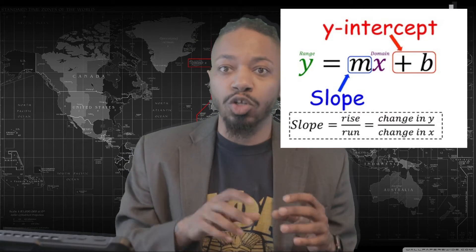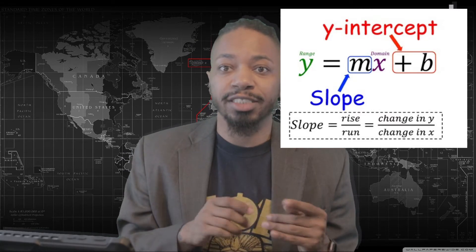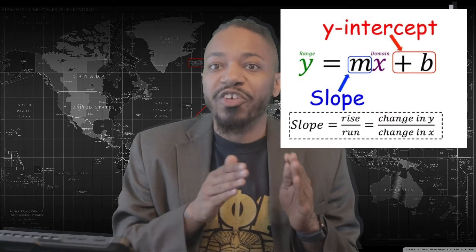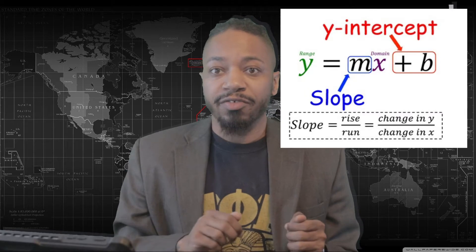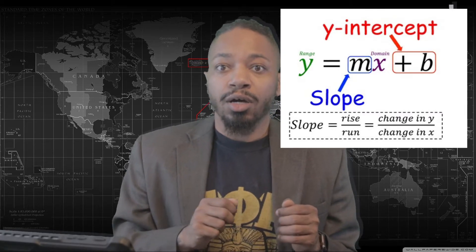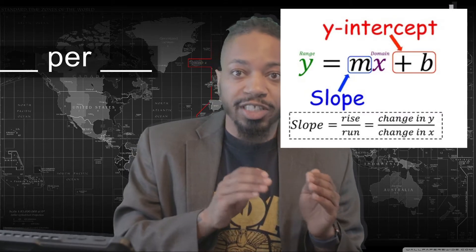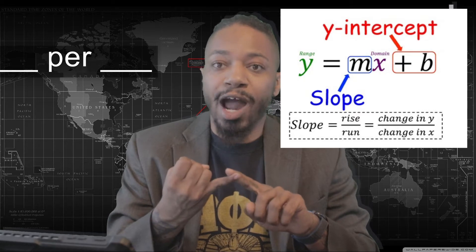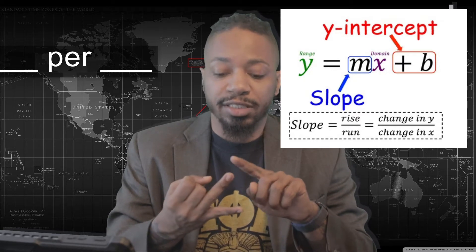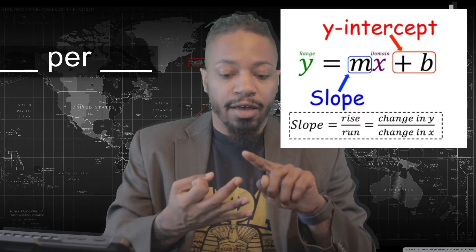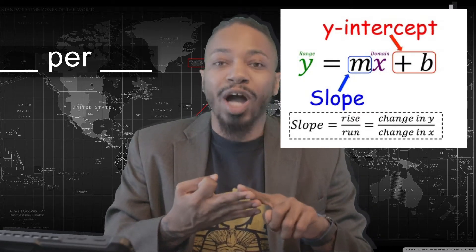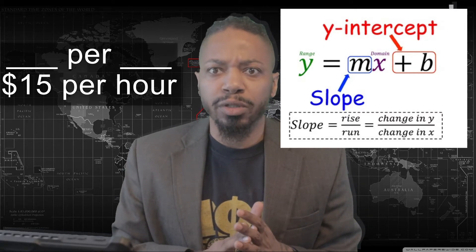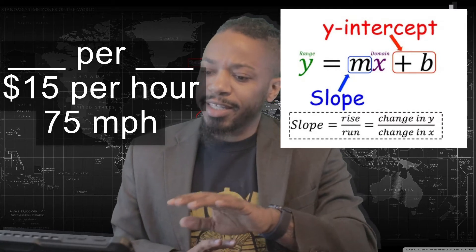So, m represents the slope — your rate of change. Usually, whenever you use the word 'per' or 'for every,' that's your slope. For every this, there's that. Or this per that. Hourly wages, speeds, quantities of food — the list really goes on and on.